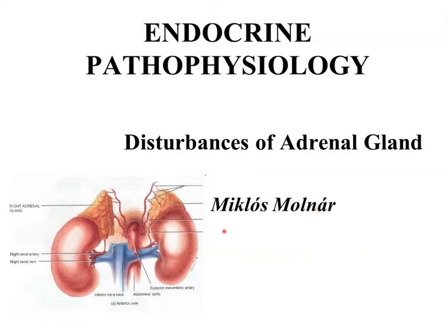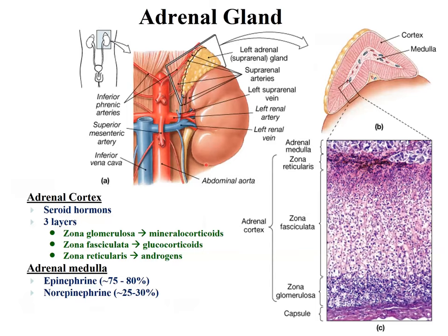Today we will have a lecture about the disturbance of the adrenal gland. The adrenal gland is located on the top of both kidneys. This gland is composed of two parts: one is the medulla inside, which is part of the sympathetic nerve system, and the cortical area surrounding the medulla.